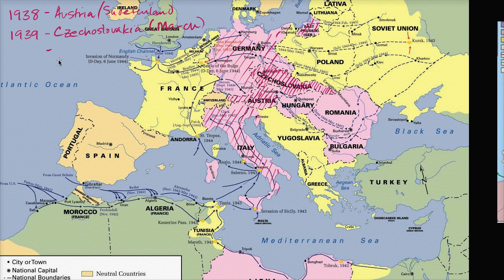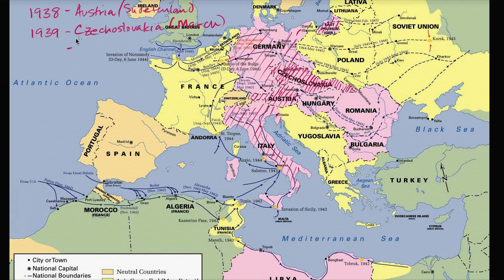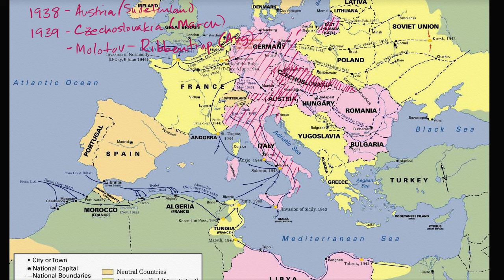And then in August, in preparation for the all-out war that's about to happen, the Germans — not wanting to fight the Soviets right away — get into a pact with the Soviet Union. They sign the Molotov-Ribbentrop Pact with the Soviet Union in August, which is essentially mutual non-aggression. And they secretly agreed on spheres of influence — where Germany can take control of part of the region and Stalin's Soviet Union can take over other parts.